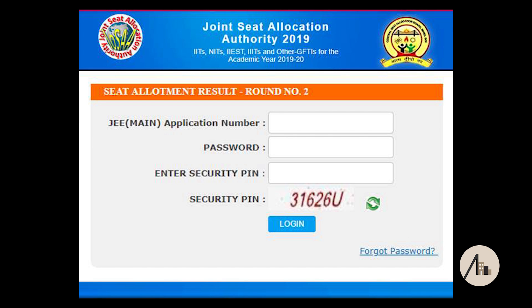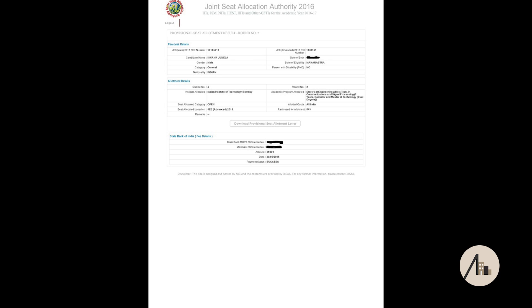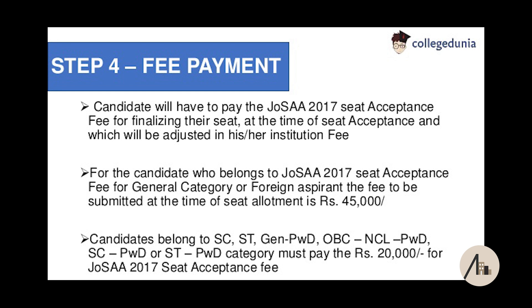The third step is the announcement of seat allotment. At the first round you sign in and they will show whether you got a seat or not. This is very important: if you get a seat you have to pay the fees. If you don't pay the fees, you might be dropped from the counselling. Sometimes people don't know when to pay the fees — that is a major problem. As soon as you get a seat, pay the fees, which will be around 30,000 to 40,000 rupees depending on what is asked.